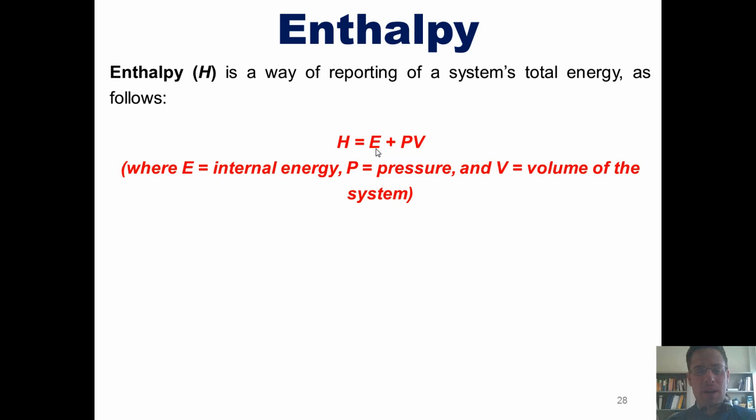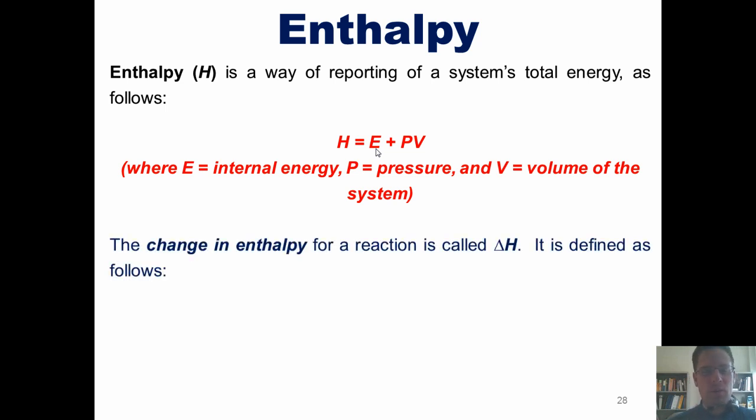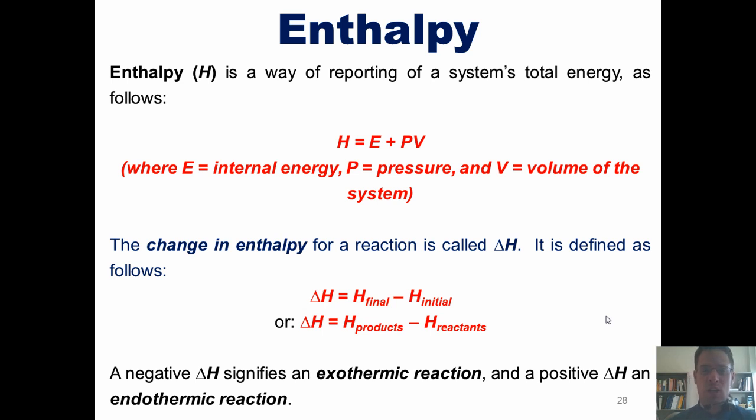But there's still more to be said about enthalpy. The change in enthalpy for a reaction is called delta H. It is defined mathematically as being delta H, the total change in enthalpy for a system, is equal to the final enthalpy minus the initial enthalpy. Or it can also be expressed as delta H equals the enthalpy of the products minus the enthalpy of reactants. Now note, just as we've seen with delta Q, a negative delta H signifies an exothermic reaction, while a positive delta H an endothermic reaction.